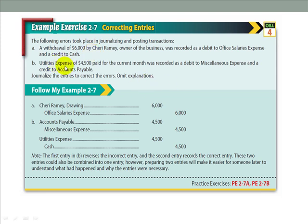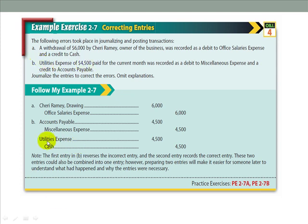The second correcting entry example: a utility expense of $4,500 paid for the current month was recorded as a debit to miscellaneous expense and a credit to accounts payable. To correct this, we first reverse the original journal entry by crediting accounts payable for $4,500 and debiting miscellaneous expense for $4,500. We then do a second journal entry recording the actual payment: a debit to utilities expense for $4,500 and a credit to cash for $4,500. This is how correcting entries work — you must first decide what was actually incorrect and the best way to fix it.